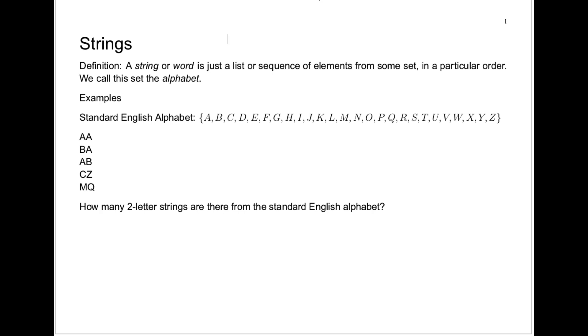When we use the word string, we mean the same thing often as when we use the word word. It's just a list or a sequence of elements from some set in a particular order. So the order makes a difference. The set from which these elements come is called our alphabet.